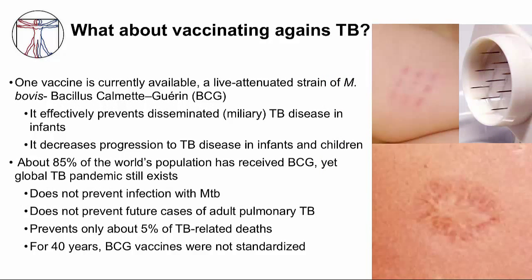Perhaps preventing TB with a vaccine would be a better approach. A TB vaccine is available and used in most TB-endemic countries, though not in the U.S. It is called BCG, which stands for Bacillus Calmette-Guérin, the names of the two scientists who developed it. It is a live attenuated strain of M. bovis taken from a cow with TB mastitis, weakened after 231 passages in culture over a 10-year period. BCG effectively prevents disseminated or miliary TB in infants and decreases progression to TB disease in young children, which is why most countries administer it to newborns. About 85% of the world's population has received BCG, yet a global TB pandemic still exists.